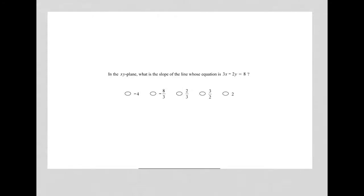This question says, in the xy plane, what is the slope of the line whose equation is 3x minus 2y equals 8?